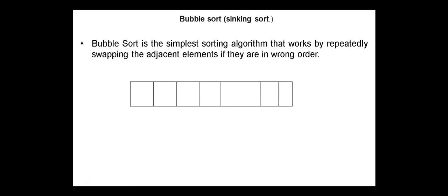Bubble sort, or also called sinking sort, is the simplest sorting algorithm that works by repeatedly swapping the adjacent elements if they are in the wrong order.